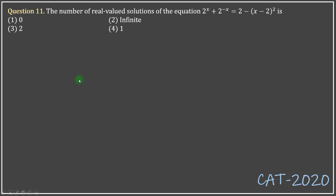Another very interesting algebra question. It says: find the number of real-valued solutions of the equation 2 to the x plus 2 to the minus x equals 2 minus (x minus 2) whole squared.